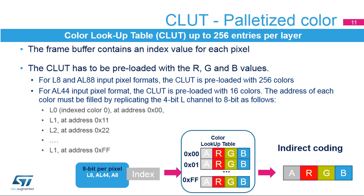Every layer can be positioned and resized. The programmable layer position and size define the first and last visible pixel of a line and the first and last visible line in the window, allowing display of either the full image frame or only a part of it. Every layer has a configurable number of lines and line length for the color frame buffer and the pitch. The pitch is the distance between the start of one line and the beginning of the next line in bytes. These parameters are expressed in bytes, not in pixels, so their values depend on the number of bits per pixel.